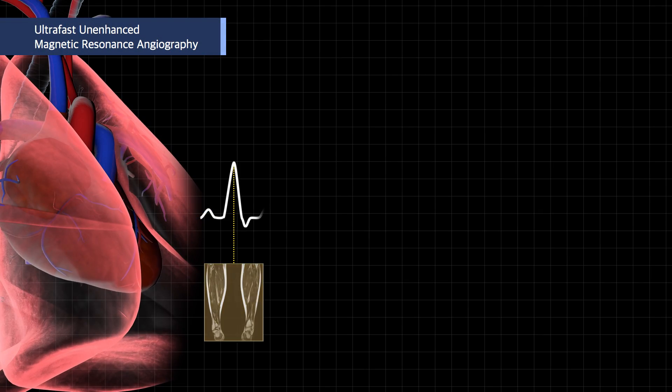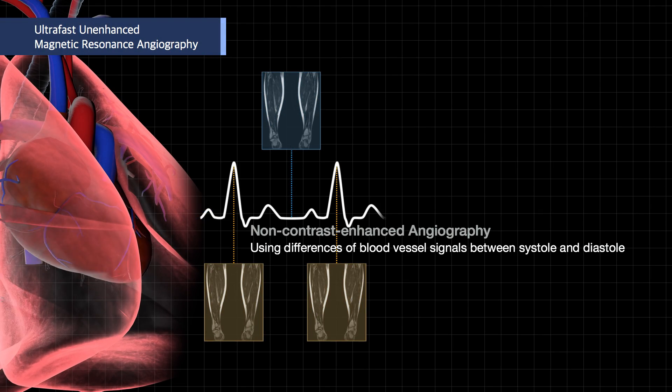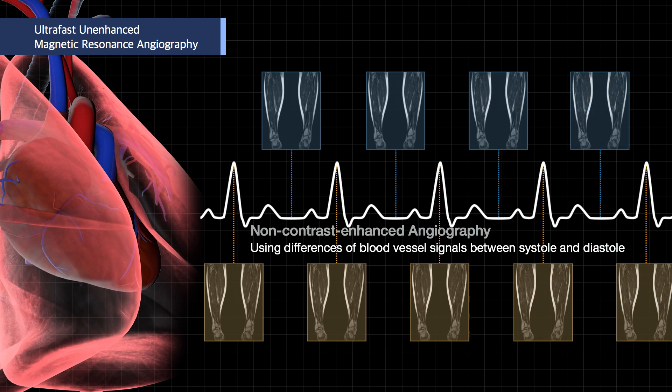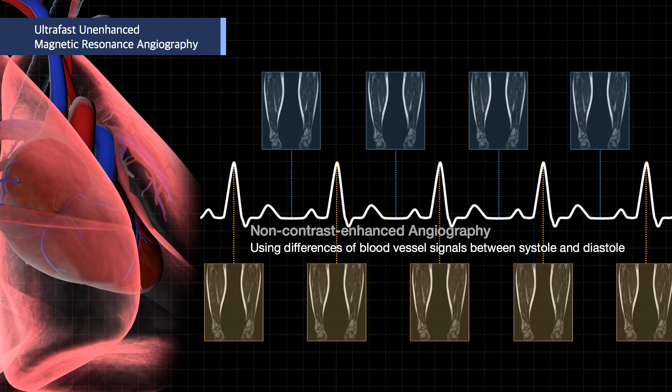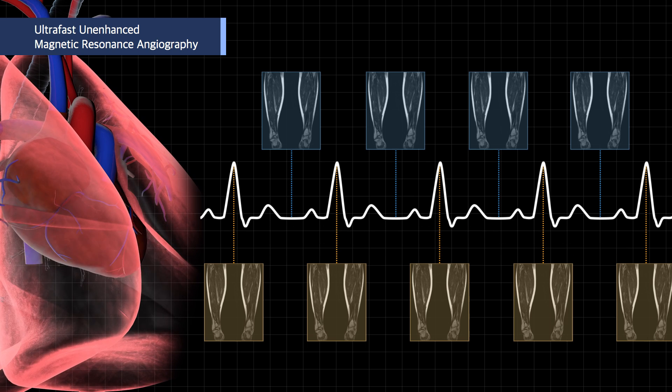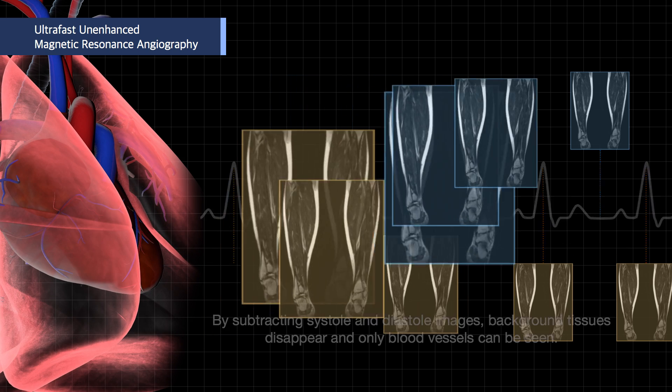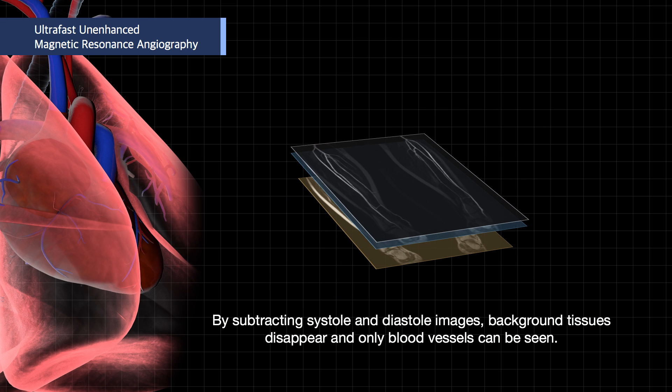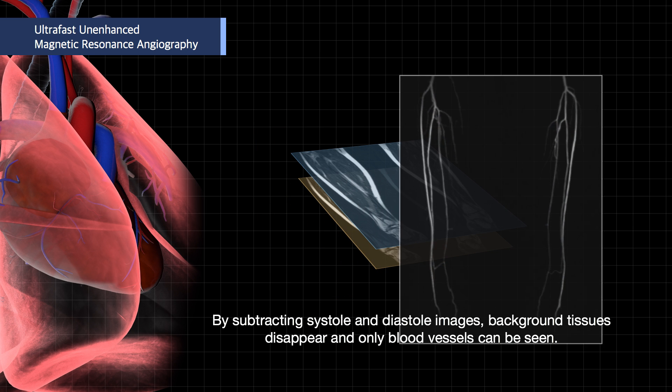Non-contrast enhanced angiography is used for patients in whom contrast agents cannot be injected. It relies on differences in blood vessel signals between systole and diastole. By subtracting systole and diastole images, it removes background tissues and leaves only blood vessels.